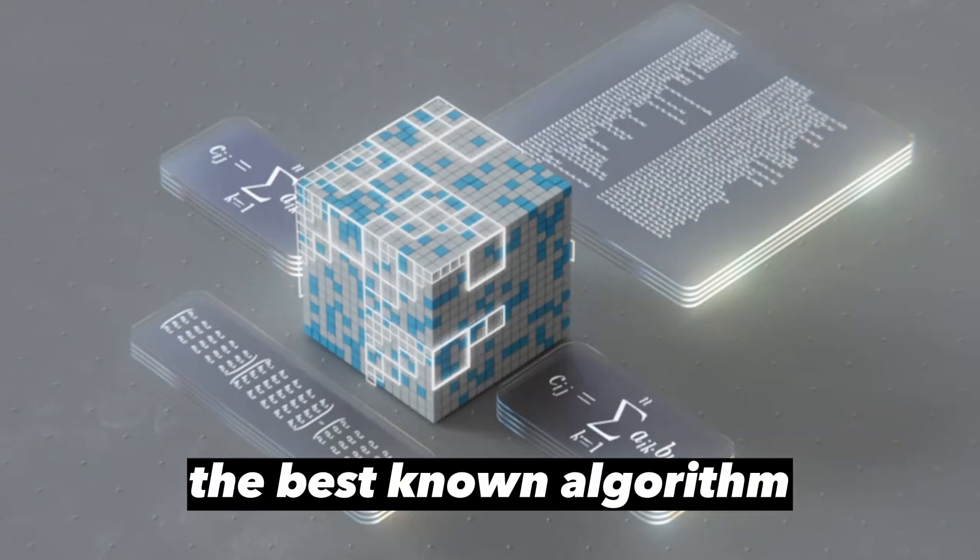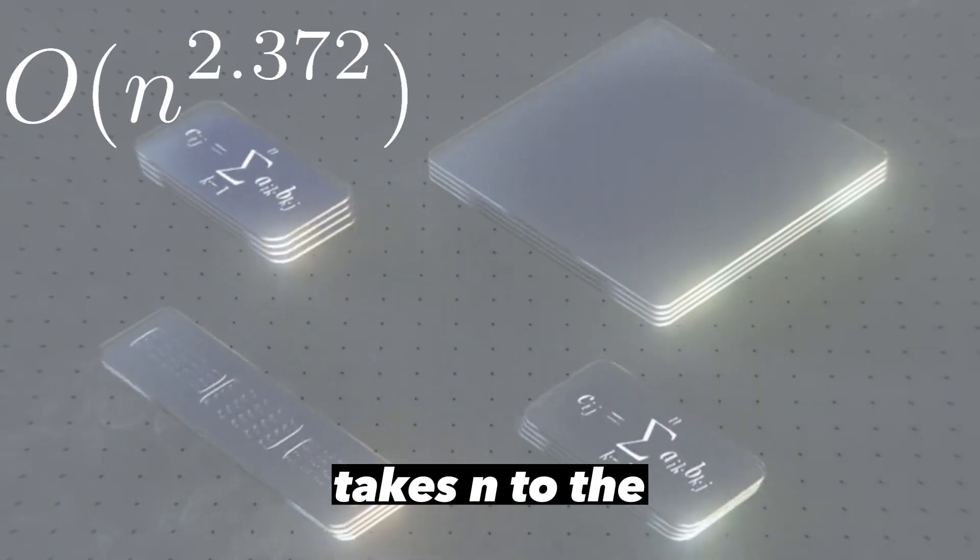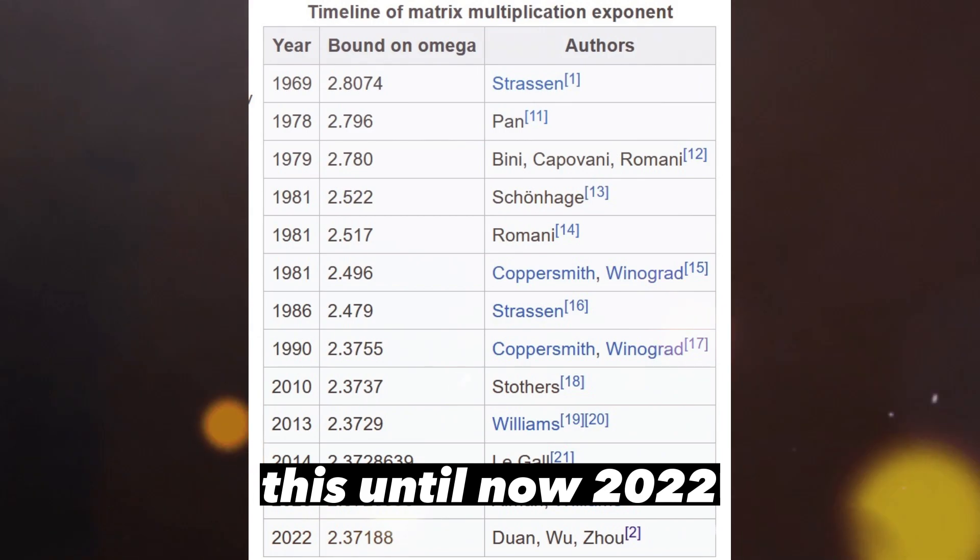The best known algorithm to multiply matrices takes n to the 2.372, approximately. This until now, 2022.